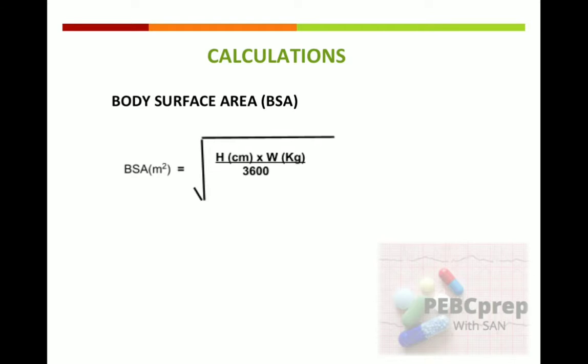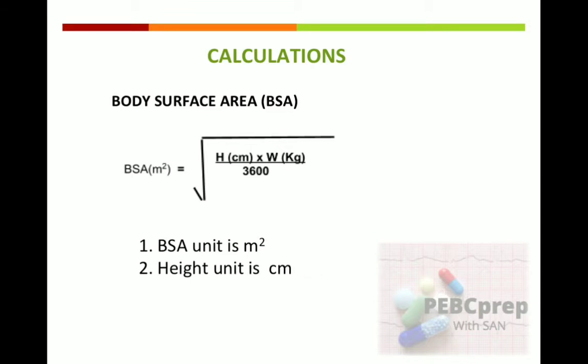First is the formula: BSA equals height multiplied by weight, divided by 3600, and then take the overall square root. Always remember in exam that the BSA unit will be in meter square. Second, the height must be entered in centimeters. Third, the weight unit is kilograms. Please be sure that you check these three units.